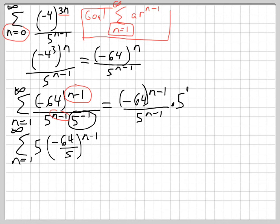Okay, so now that we have this in the proper form, our index is n equals 1 and our geometric exponent is n minus 1 so it matches up with what we want. But we notice that our ratio is negative 64 fifths and the absolute value of that is greater than 1. So this thing does not converge to a sum. It diverges. Okay, so we did need to rewrite this to verify it but this is the case.